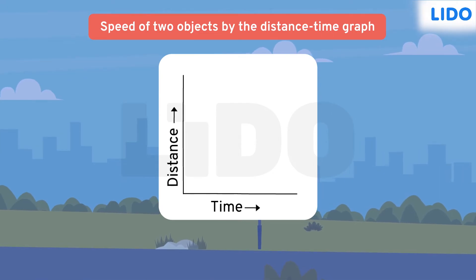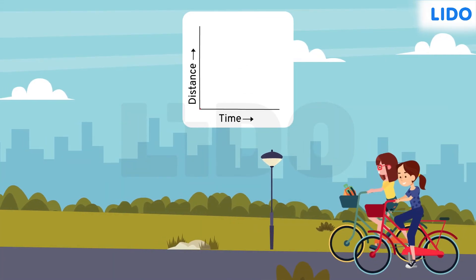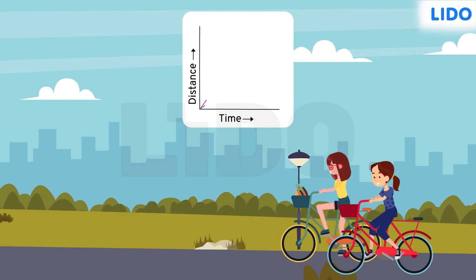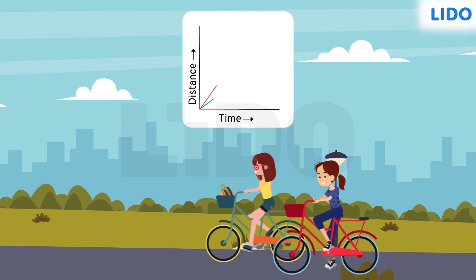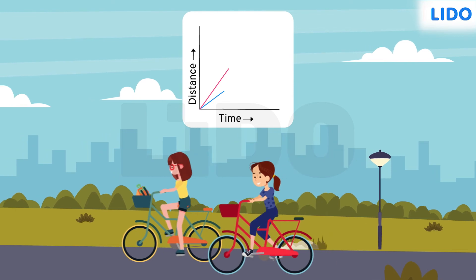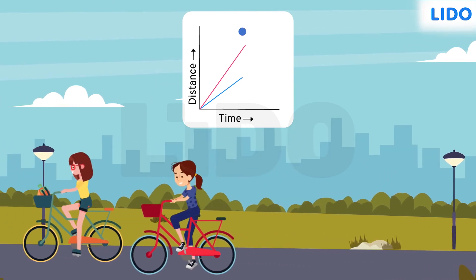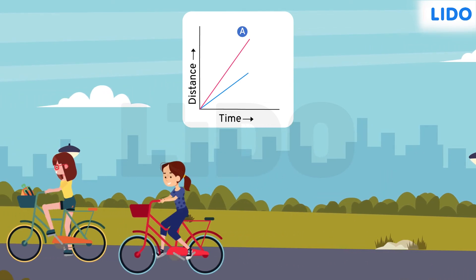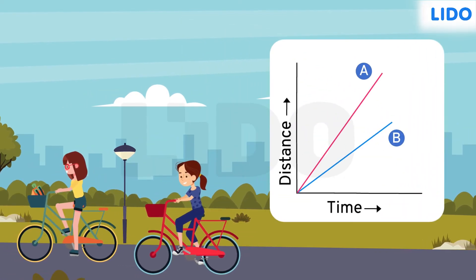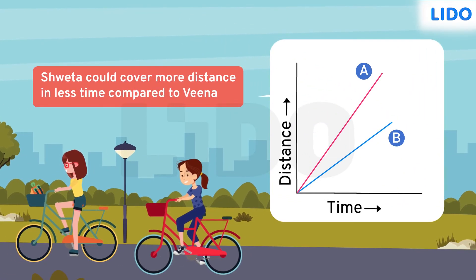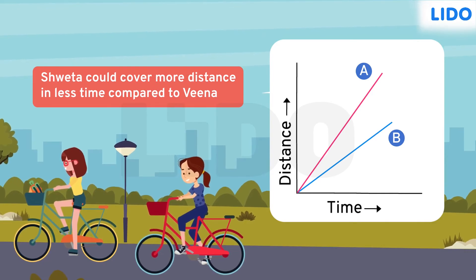Let's see an example. Shweta and Veena participated in a race. Shweta's speed is shown by the pink line and Veena's speed by the blue line. We see that Shweta's graph is steeper than Veena's, which means Shweta could cover more distance in less time compared to Veena.